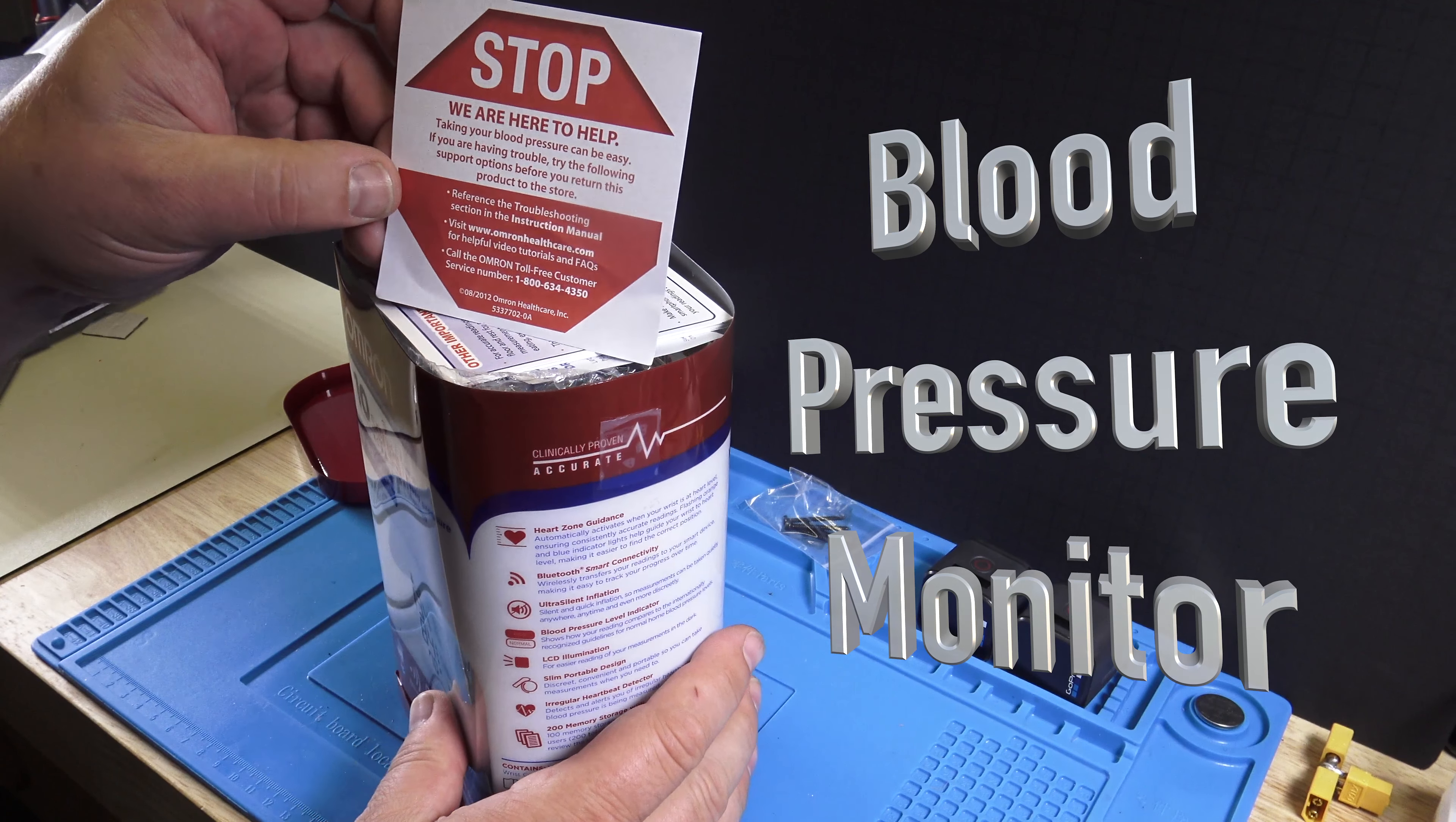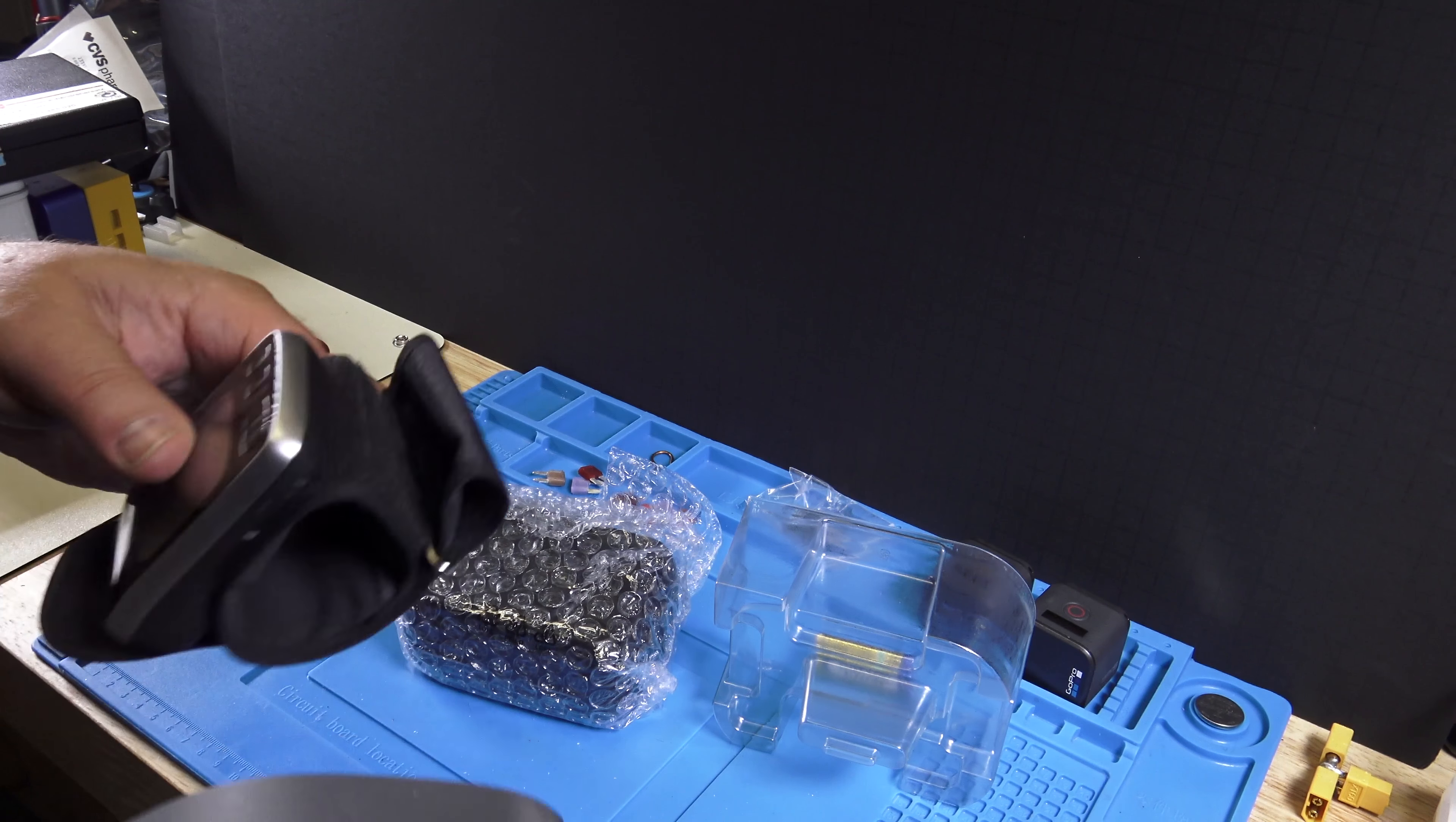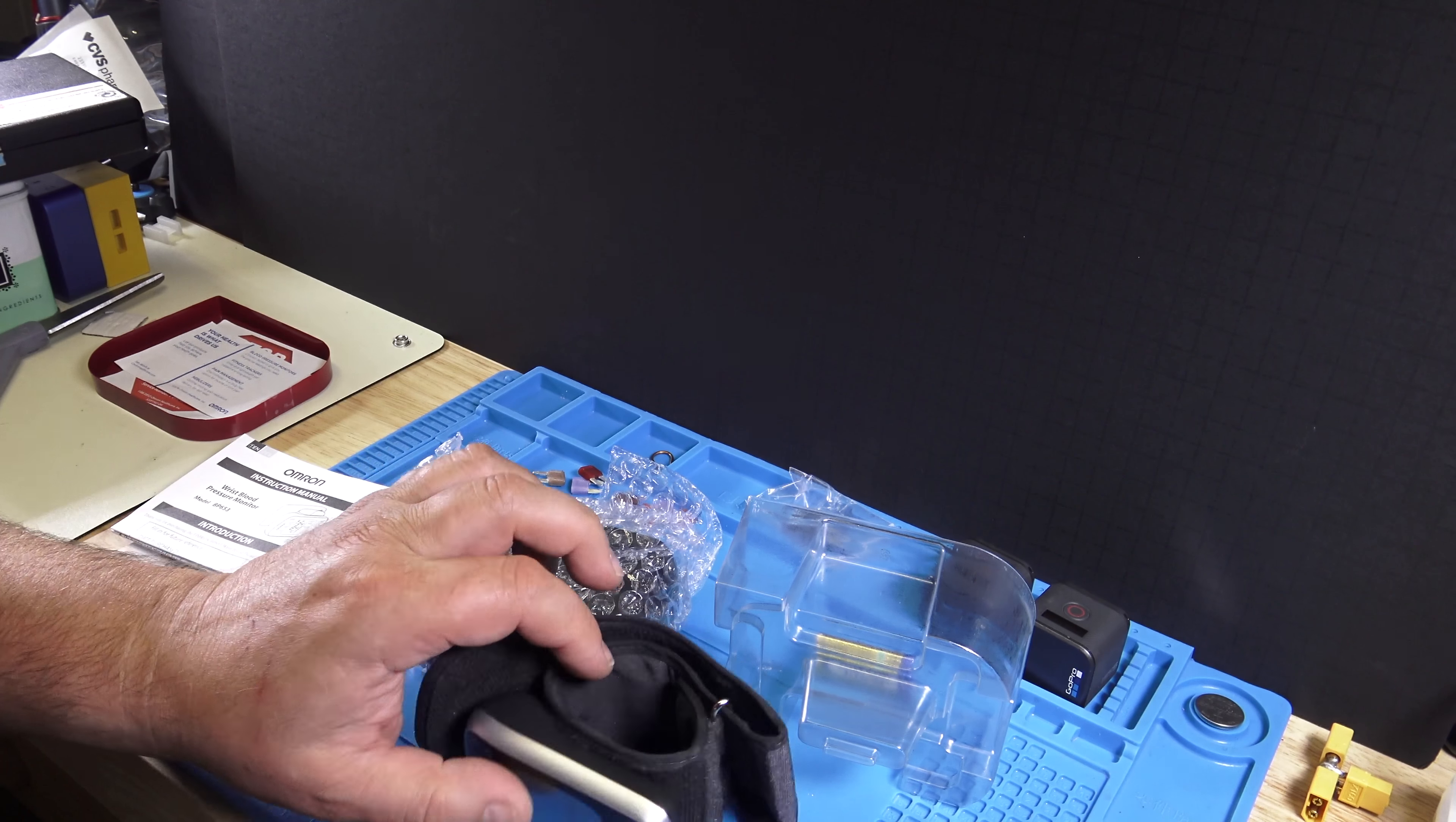What else? A little box. Batteries. Manuals. And then the pressure monitor.